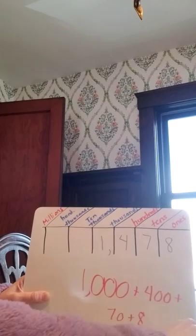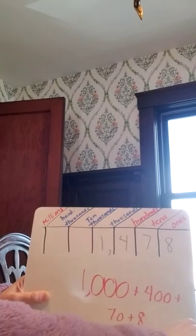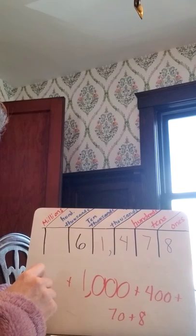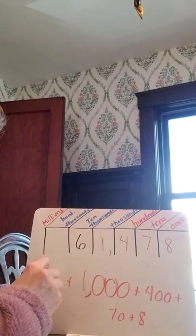If I wanted to add to this and I put a 6 here, that 6 is 6 groups of 10,000. So it's 6, 1, 2, 3, 4 zeros for 60,000, okay?